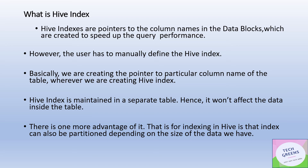Hive indexes are pointers to particular column names of a table. The tables are stored as data blocks in the underlying distributed file system. So basically, when we create an index, we are creating a reference pointer to a particular column name in that particular data block.